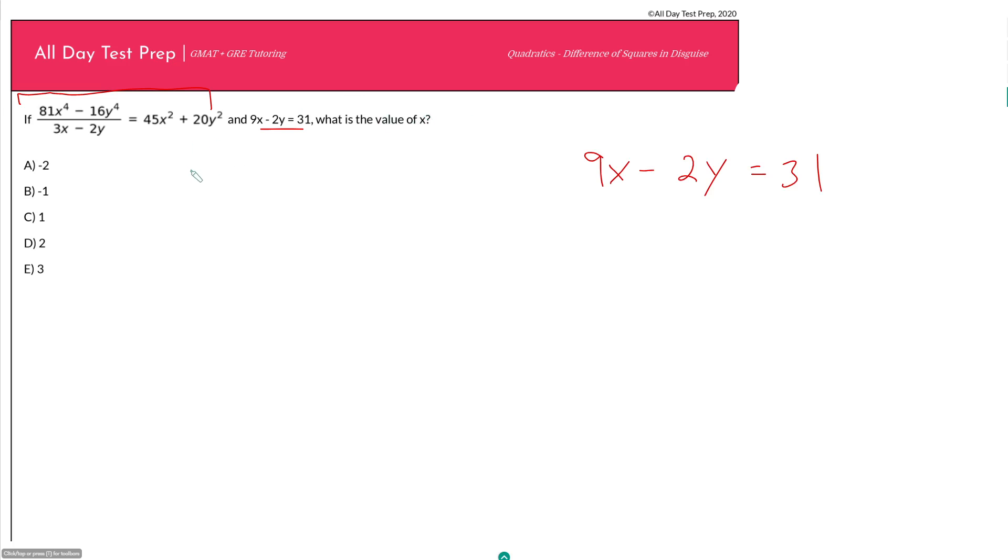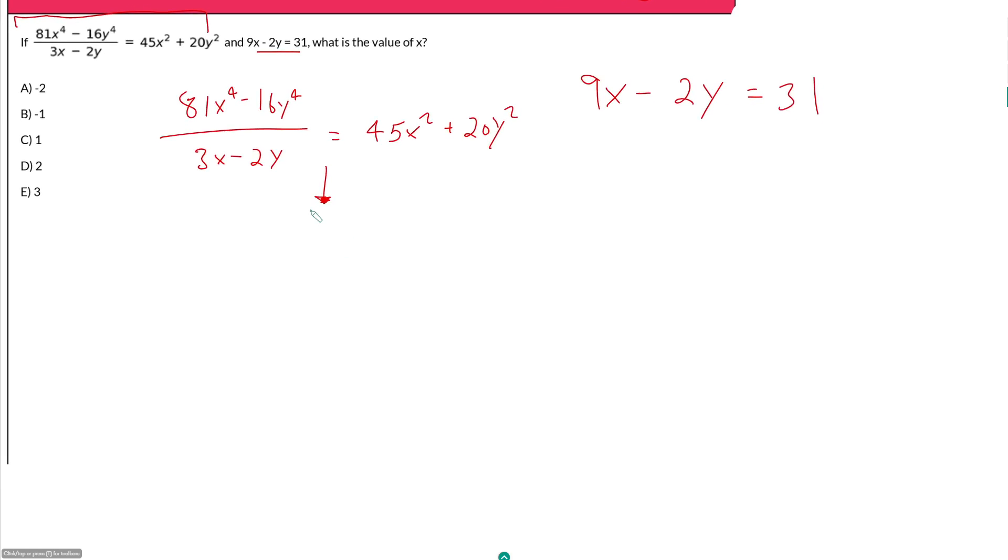So this says 81x to the 4th minus 16y to the 4th all over 3x minus 2y is equal to 45x squared plus 20y squared. Now, for these questions that happen sometimes in these video series, I sort of spoil the key to the question just based on whatever the name of the chapter or the video is. And so on your actual GMAT, it's not going to say difference of squares in the top right of your screen whenever you're given a difference of squares question.